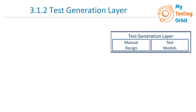I've extracted the test generation layer part from the GTAA diagram, which shows that it consists of manual design and test models. The test generation layer in GTAA supports both manual and automated design of test cases or test suites.